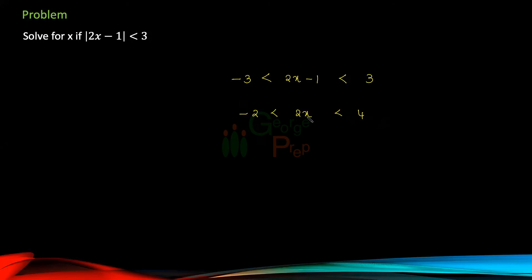So this time I'm going to divide all of them by 2 because I need x in the middle. So if I divide by 2, I'll get minus 1 less than x less than 2.